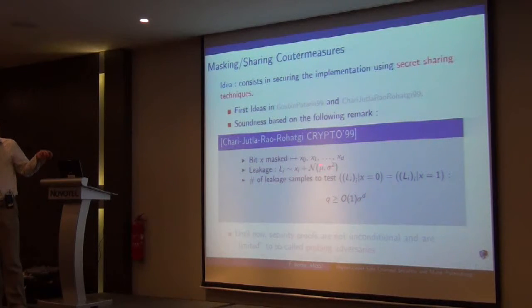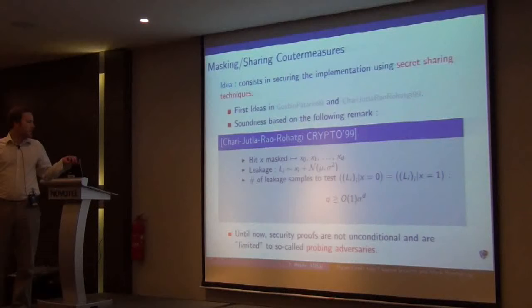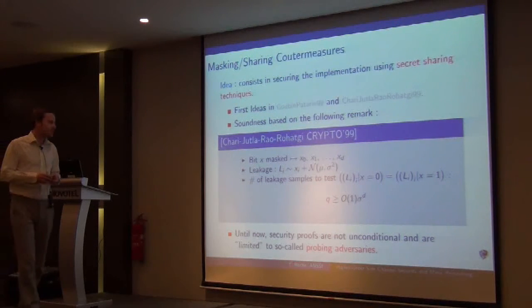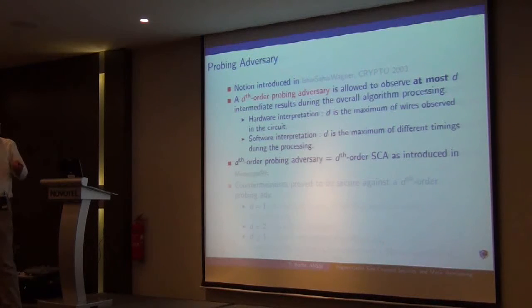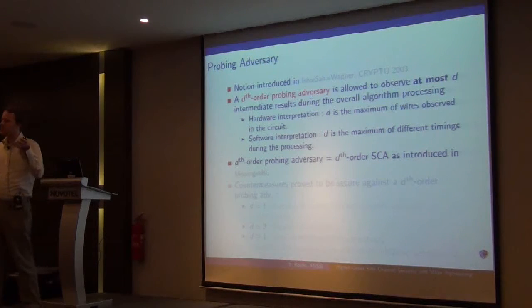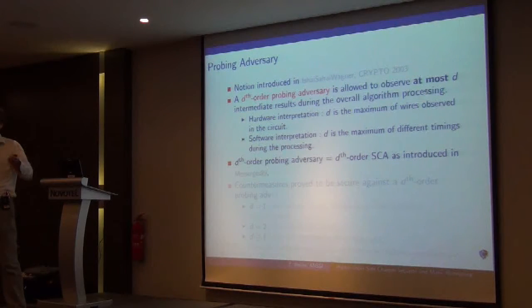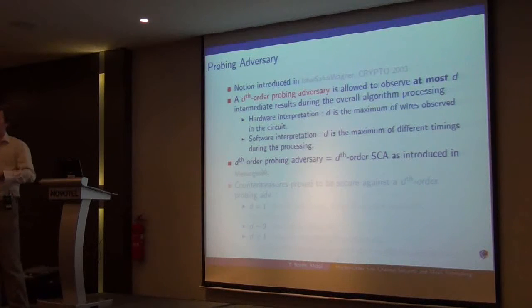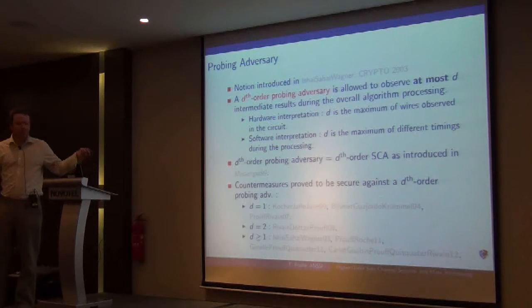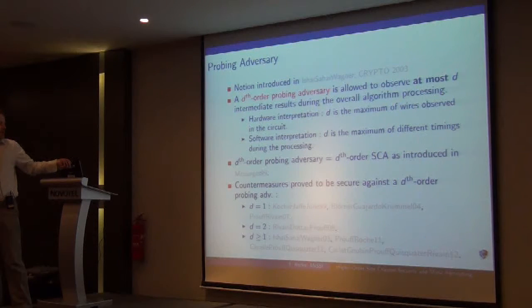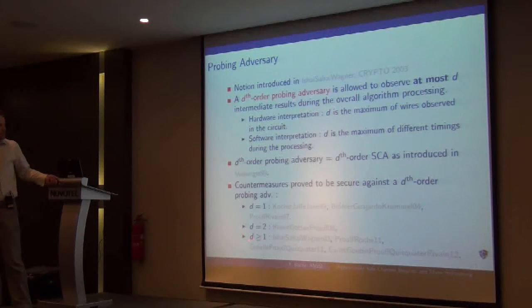With respect to sigma, sigma will be the standard deviation of the noise, of the measurement noise. Masking countermeasures have security proofs that are done into the probing adversary model that I will define here. A d-probing adversary is able to observe d intermediate variables without considering any noise, and if the countermeasure is secure against such adversaries, then a real adversary needs at least to observe d+1 intermediate variables in order to attack. There have been some propositions of countermeasures that can be proven, and recently some of these countermeasures can be applied for any order d, so any number of shares.